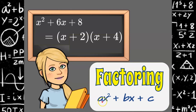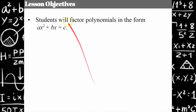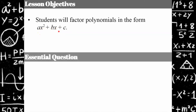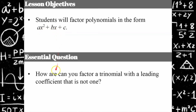My previous video in the playlist is factoring when a is one, when the leading coefficient is one. So if you haven't learned to factor with one as your leading coefficient, I would take a look at that video before this one. Our objective today is to factor a trinomial, which is also a polynomial, in the form ax squared plus bx plus c, with a leading coefficient that is not one.